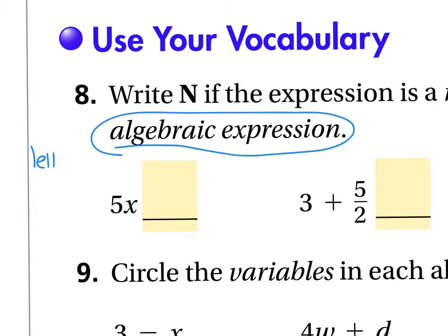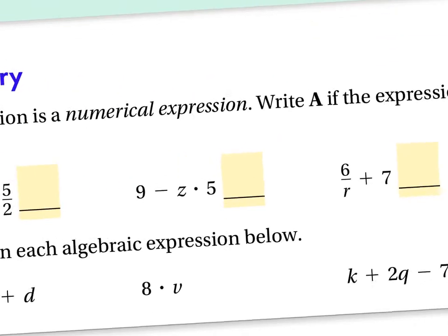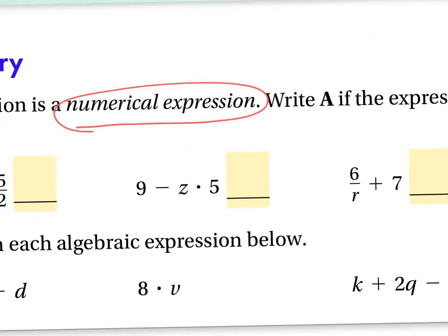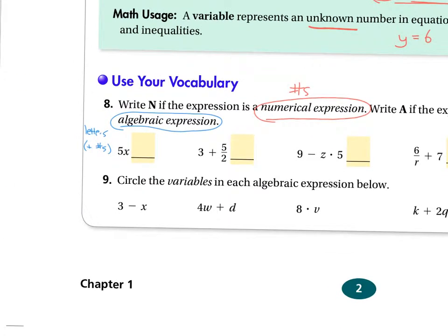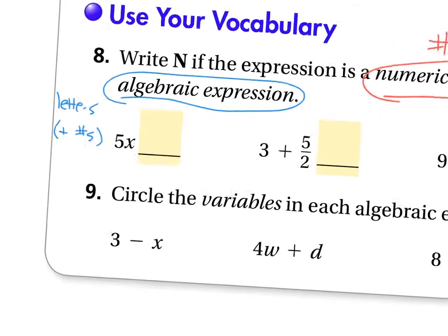This one here has letters and it could have numbers as well. And of course the numerical expression has only numbers. 3 + 2, that's a numerical expression. Some might argue that a numerical expression falls under the category of algebraic, just like Boylston is inside Massachusetts, but for now we'll use the differentiation here.